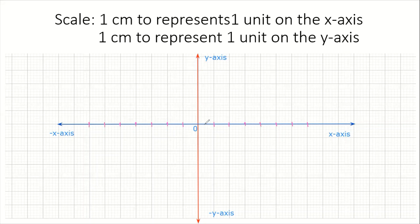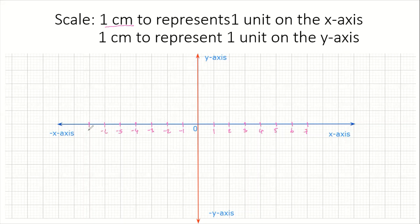The distance between the lines, when measured, is one centimeter. So we've taken care of this part of our scale. Since one centimeter represents one unit, we count by one: here is zero, then one, two, three, four, five, six, seven, and so on. Going in the negative direction it's negative one, negative two, negative three, negative four, negative five, negative six, negative seven.